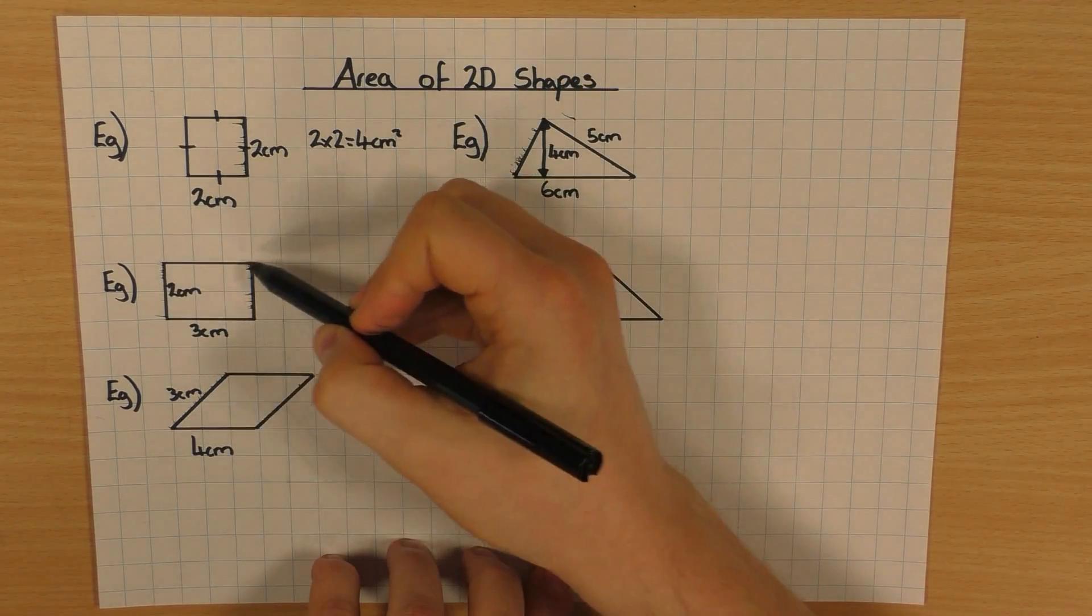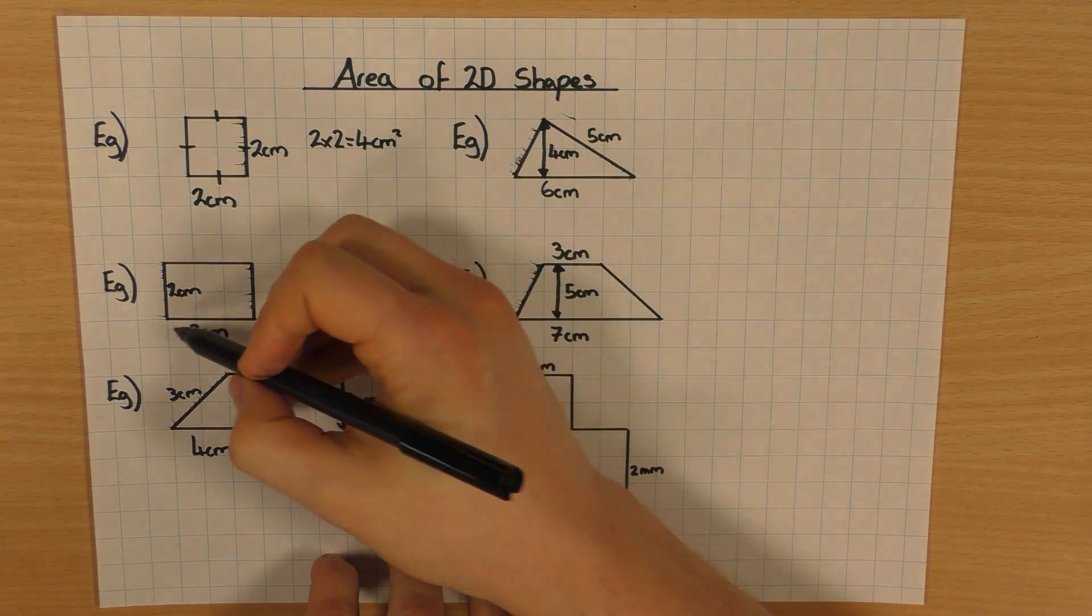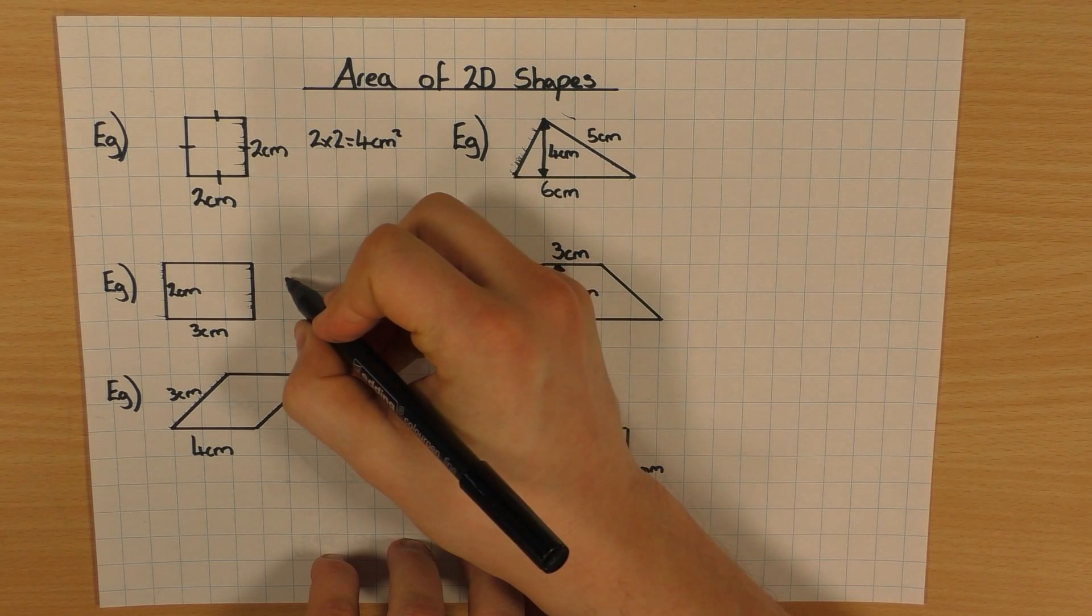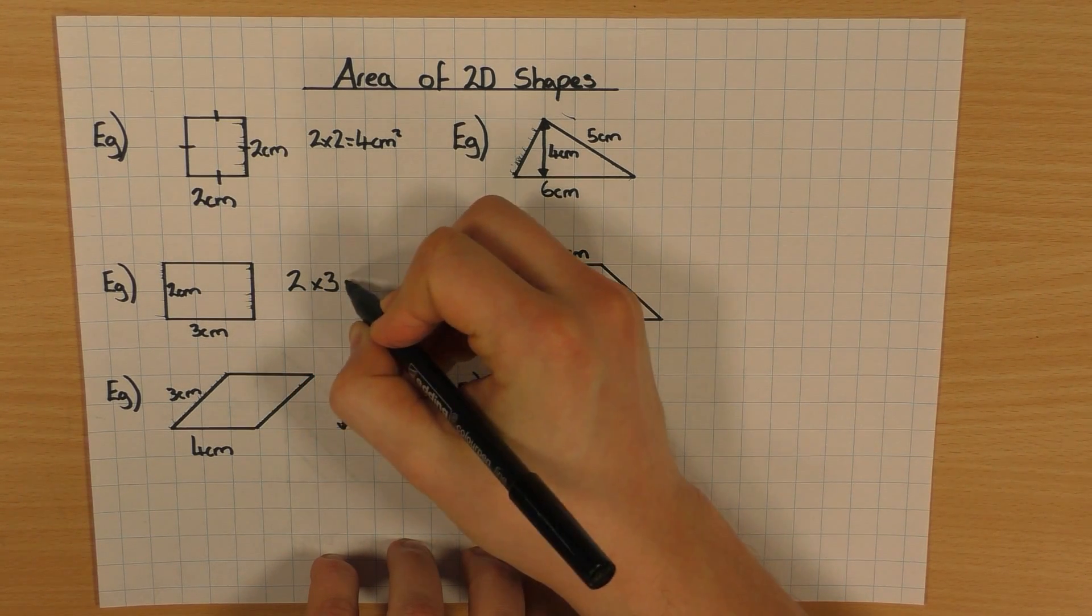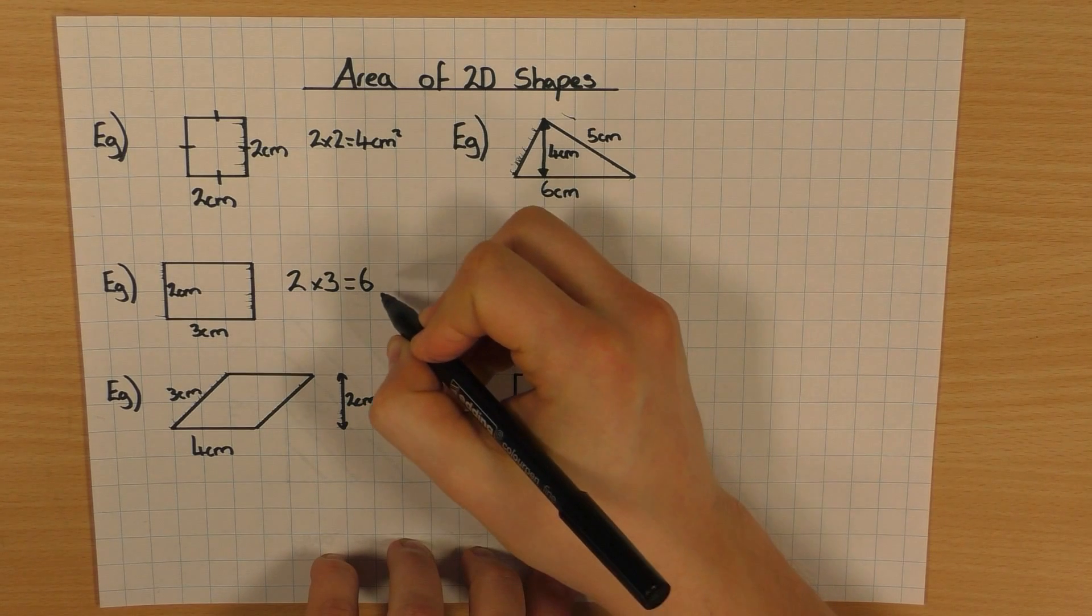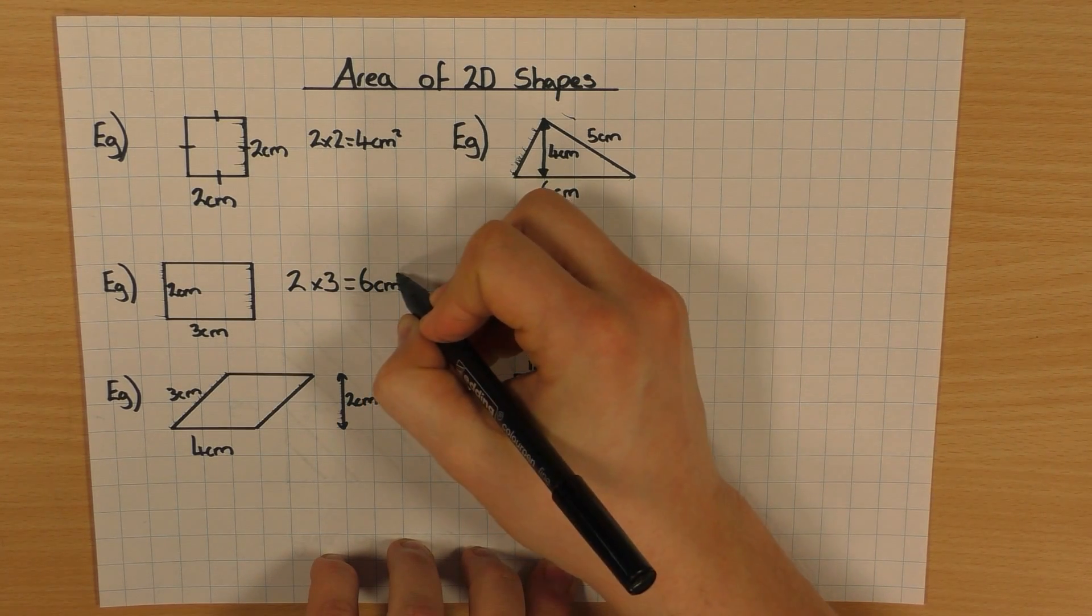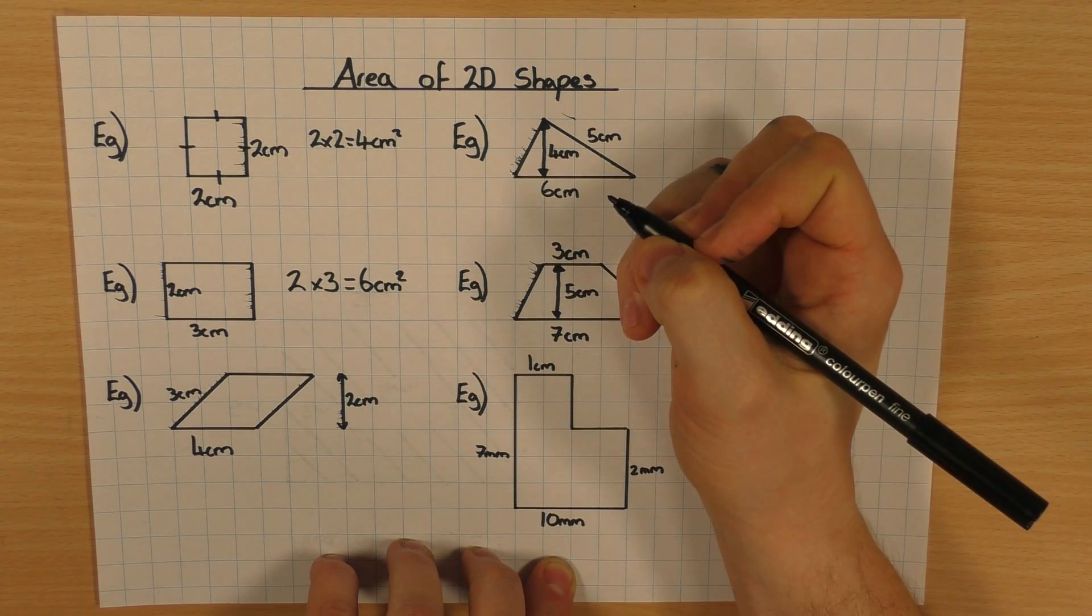A rectangle here is exactly the same thing. Base times the height. So in this case, 2 times 3, which is 6. And again, don't forget your units, cm². Area is always squared.